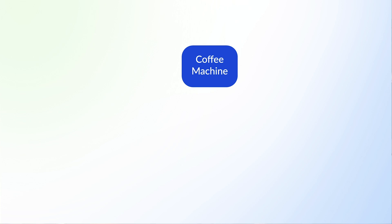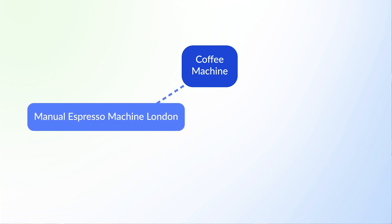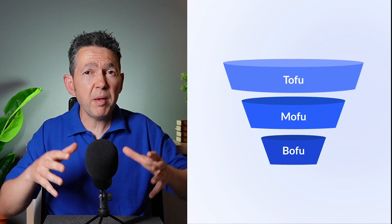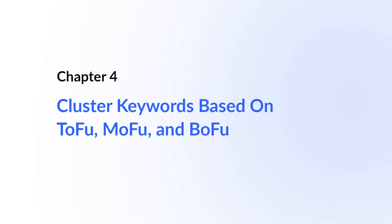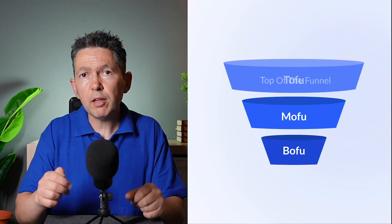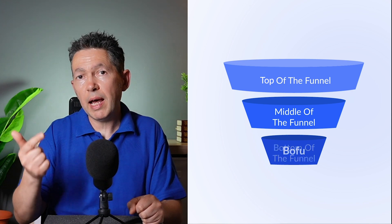You may be wondering: if your transactional keyword is 'manual espresso coffee machine in London,' why do you need content on espresso making tips? You're about to discover why when we dive into TOFU, MOFU, and BOFU. These stand for top of the funnel, middle of the funnel, and bottom of the funnel — different parts of the buyer's journey within a sales funnel.